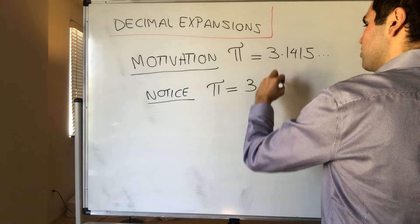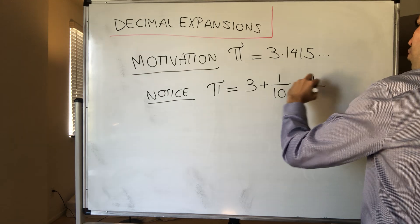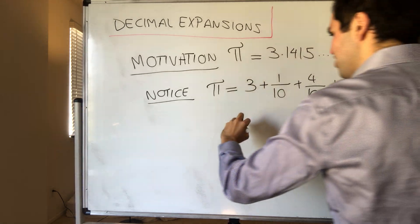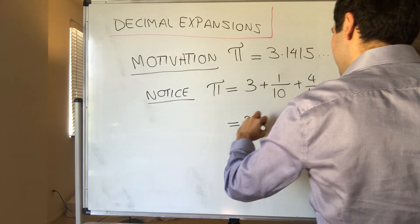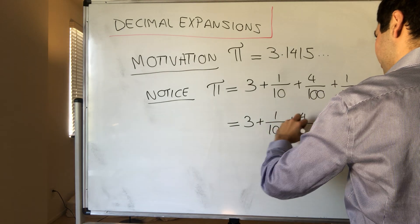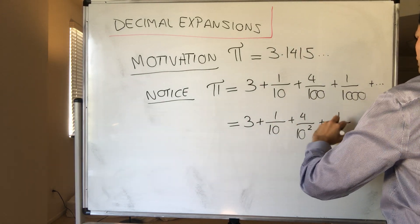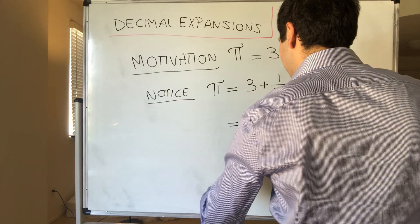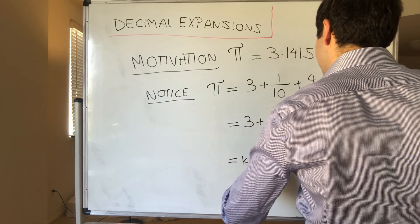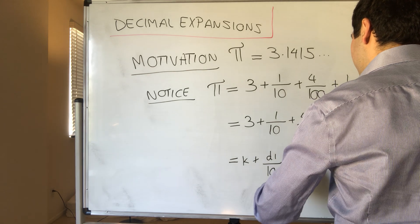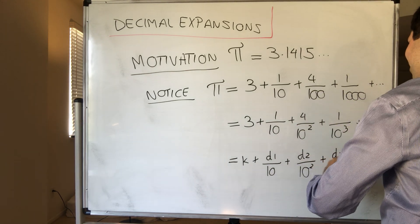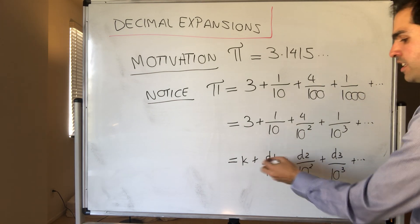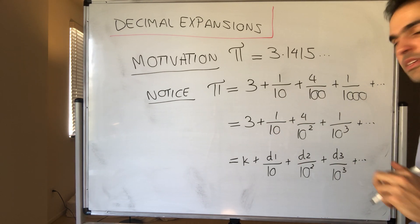But it's really 3 plus 1 tenth plus 4 hundredths plus 1 thousandth, et cetera, and it's really 3 plus 1 over 10 plus 4 over 10 squared plus 1 over 10 cubed plus dot dot dot. And more generally, you can write this as k plus d1 over 10 plus d2 over 10 squared plus d3 over 10 cubed, where k is an integer and all the di's are digits between zero and nine.